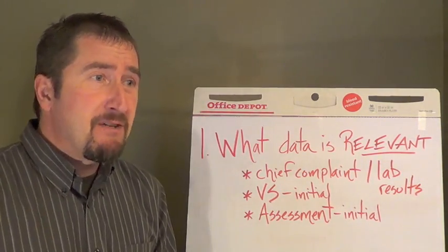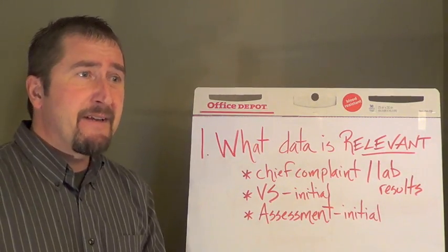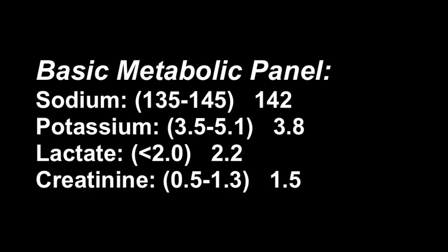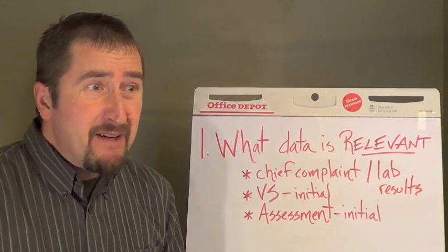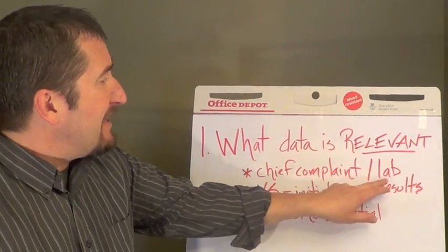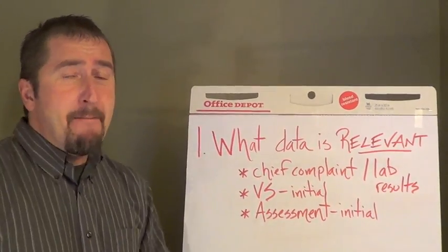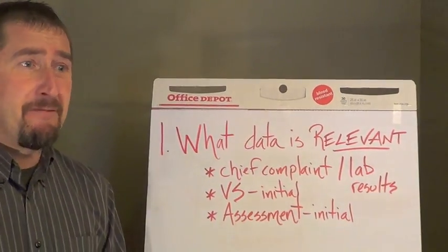The basic metabolic panel has a sodium of 142, a potassium of 3.8, lactate is 2.2, and creatinine is 1.5. And Alice has no history of renal disease. Is there any relevant lab results in that basic metabolic panel that you're concerned about?